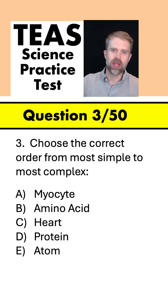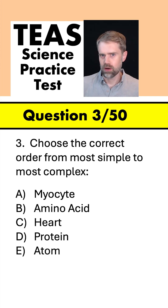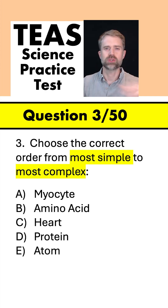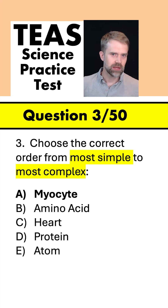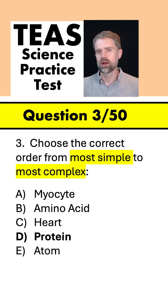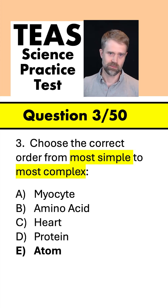Choose the correct order from most simple to most complex, and we have myocyte, amino acid, heart, protein, and atom.